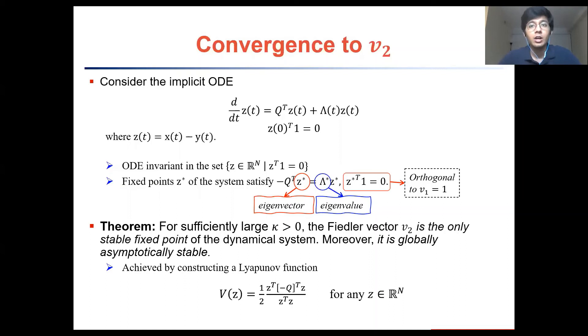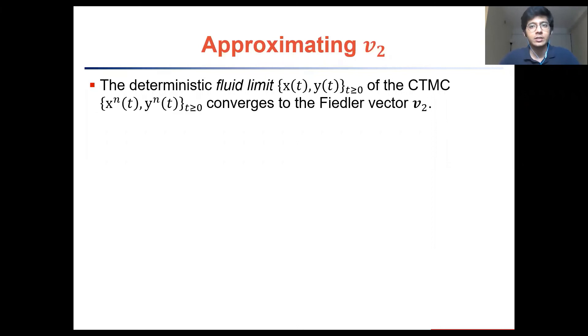So to briefly summarize what we did so far, we constructed a stochastic process involving two groups of random walkers which compete and kill each other and then redistribute over the graph according to the density distributions, which is sort of similar in flavor to vertex reinforced random walks as well. So far we have shown that the deterministic fluid limit of a stochastic process converges to the Fiedler vector but this is actually not really enough for us.